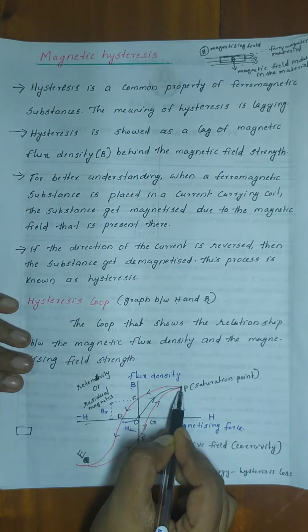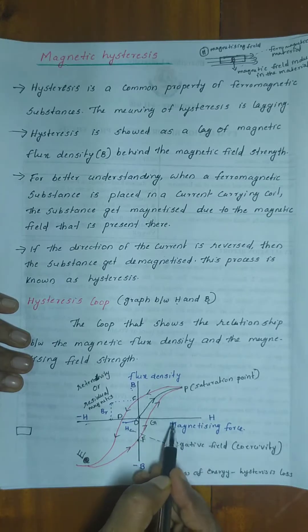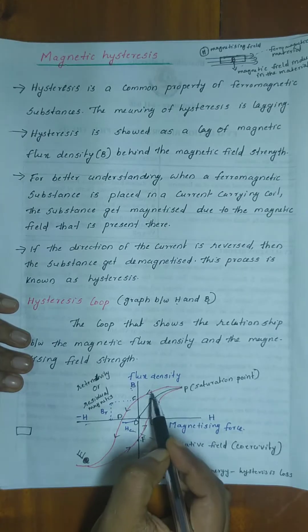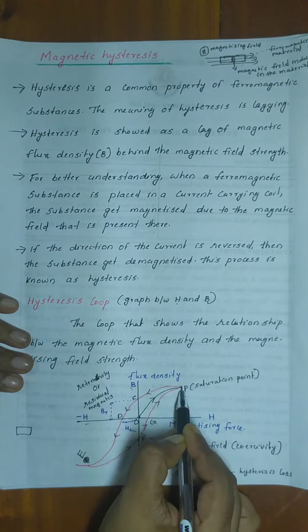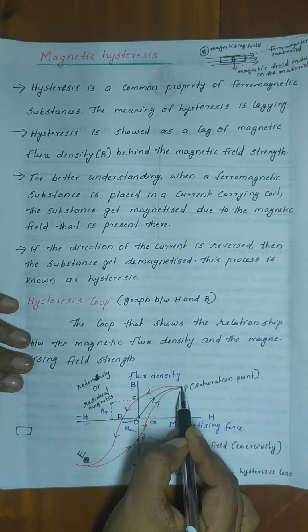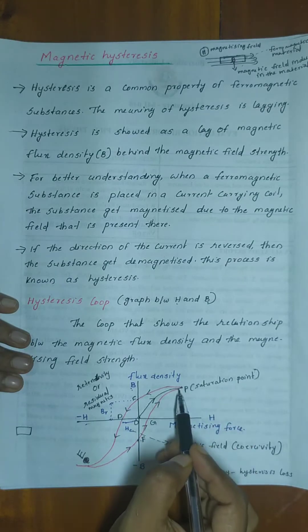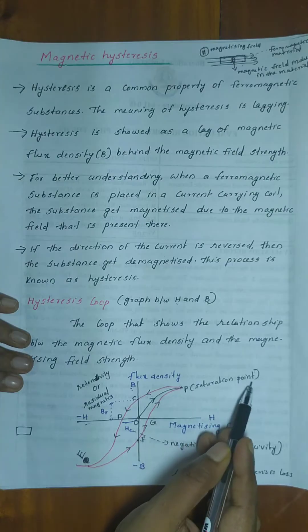As we continue to increase the magnetizing force beyond point P, we reach the saturation point. This saturation point is where further increases in the magnetizing force produce no additional increase in flux density.